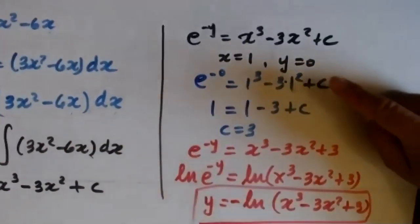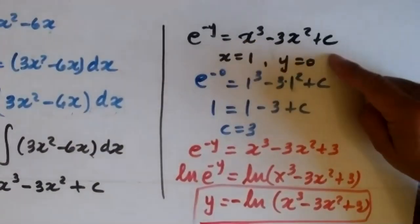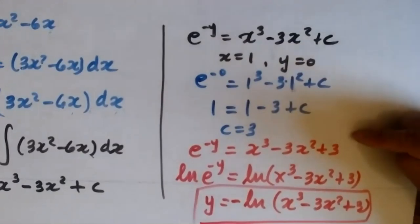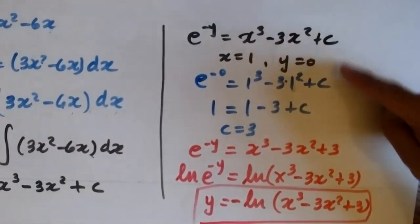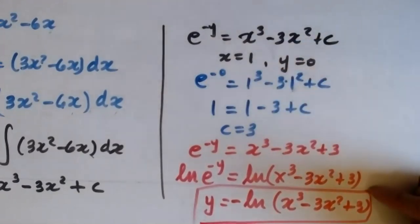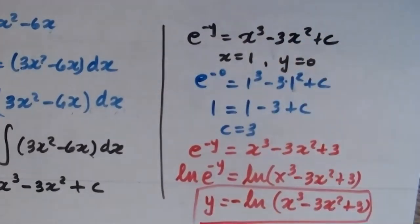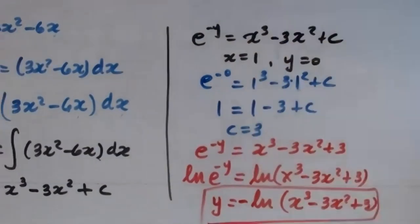If you don't have an initial condition, you stop before finding C and leave it as a constant. But if you have one, you plug it in to find C, then write your explicit solution y equals...